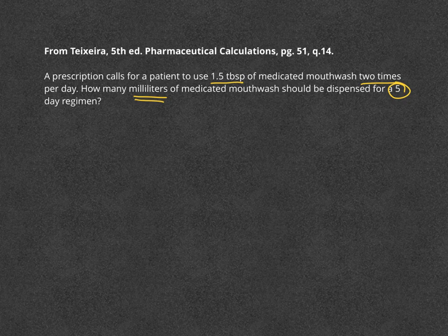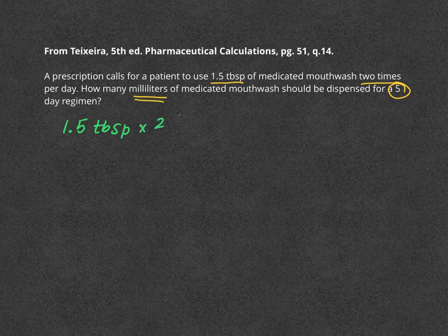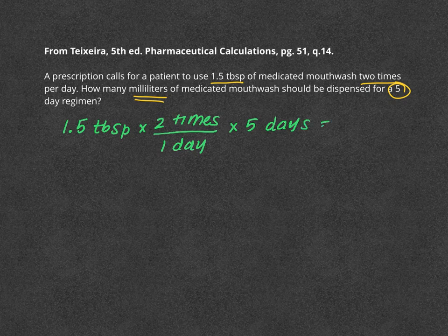This is as simple as setting up a conversion. So let's start with what we have: one and a half tablespoons of our mouthwash, used two times per one day, over a period of five days. What we get is a total of 15 tablespoons.